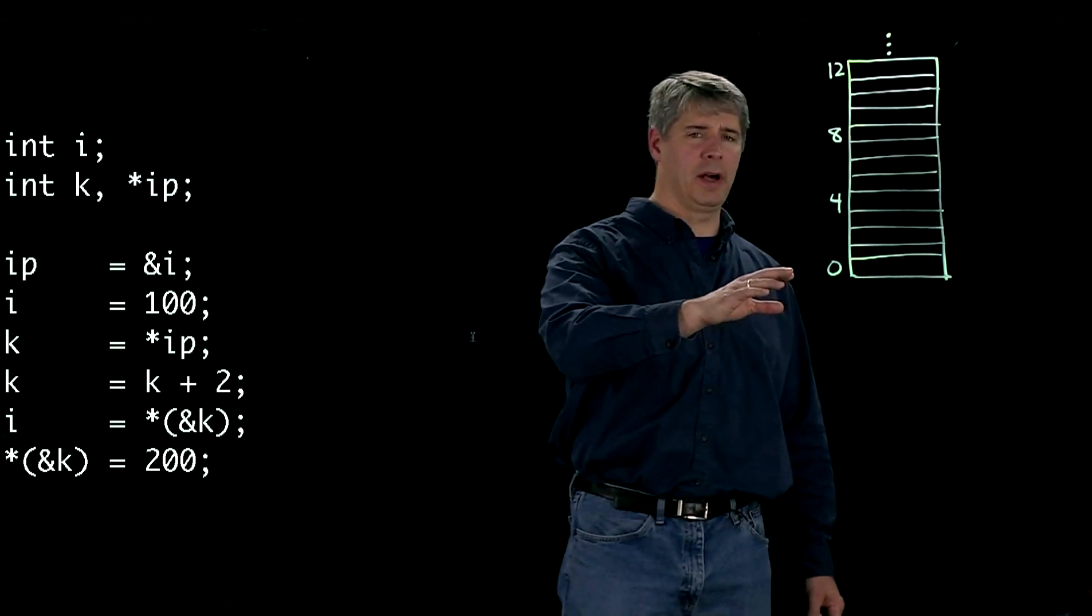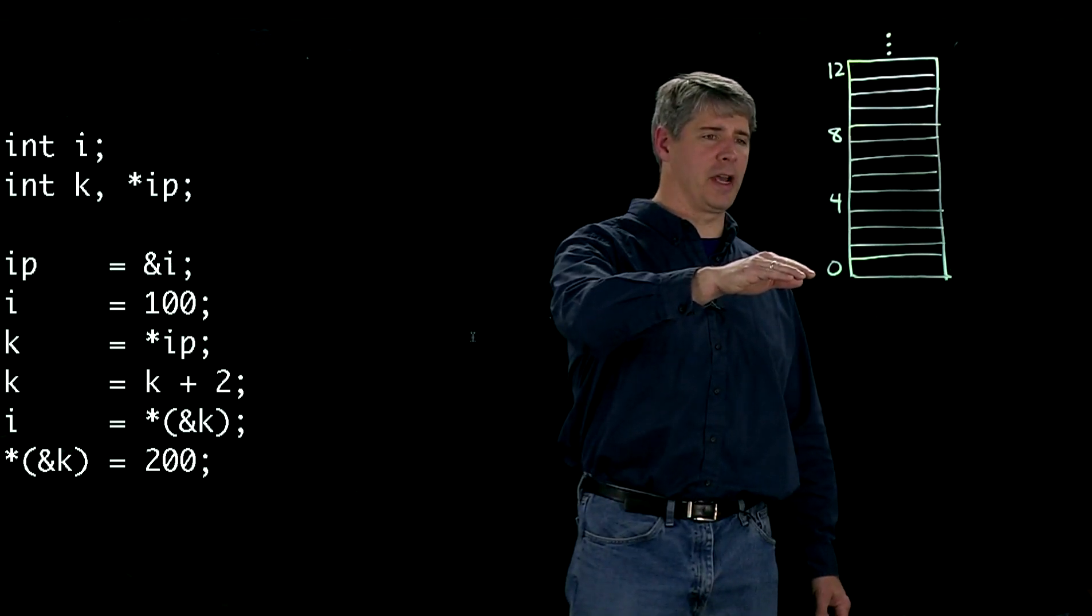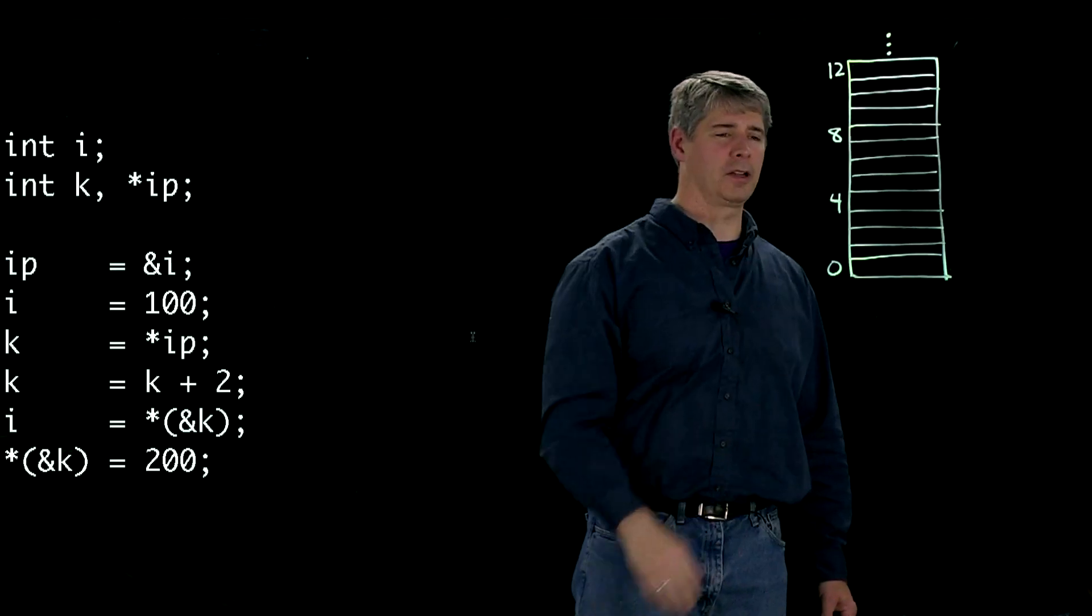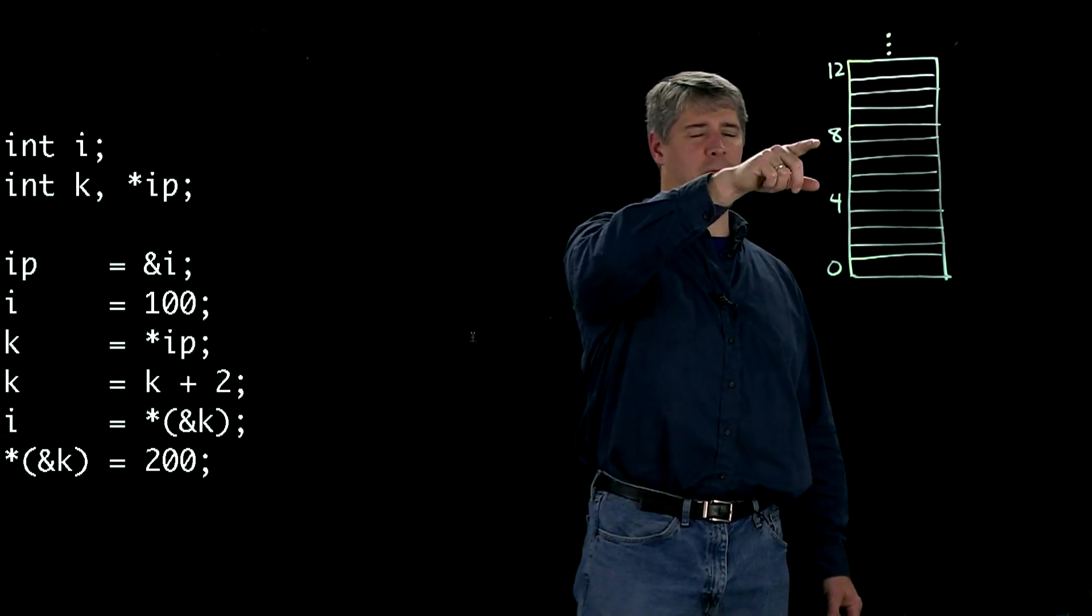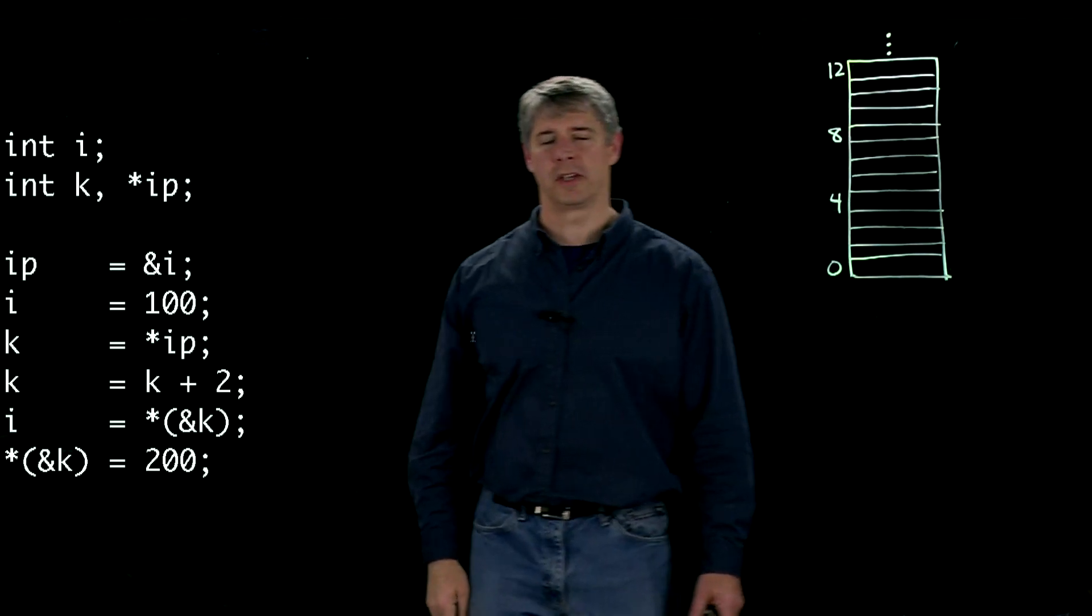So this is our memory map. Again, this is the zeroth byte and higher bytes go up. This is address 0, address 4, address 8, address 12, etc.